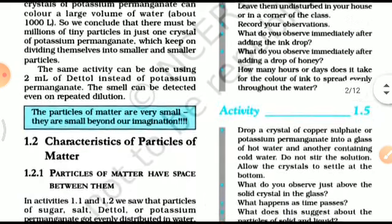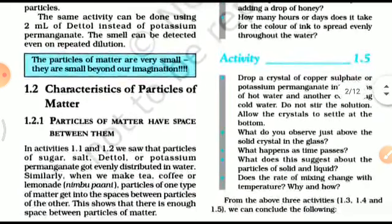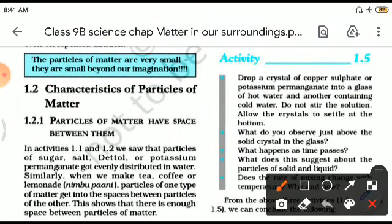These particles have some characteristic properties. First and foremost, particles of matter must have space in between them - inter-particle space. Just observe when a lemonade maker adds lemon to the solution, you will find small particles there, and you can see some gap. This gap is called inter-particle space.